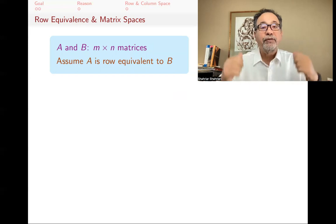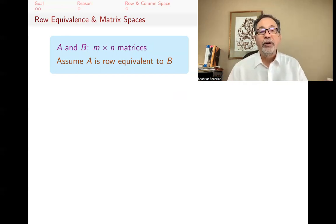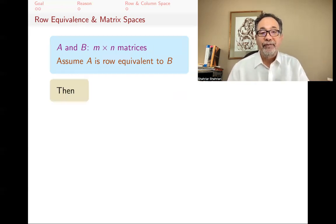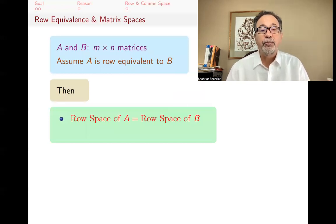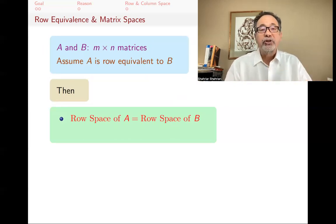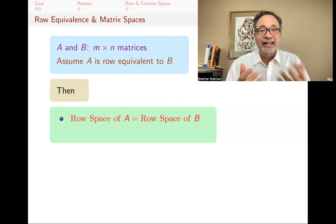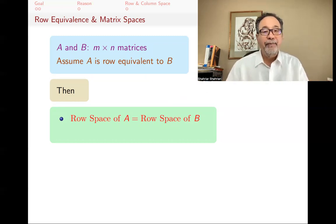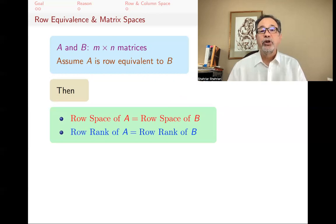The row space of A and the row space of B are going to be the same. This is not too hard to see: elementary row operations are essentially linear combinations, so the row space doesn't change. You have to show that the row space of A is a subspace of the row space of B and vice versa — I've done that in a previous video. And because the row spaces are the same, the row ranks are the same as well.